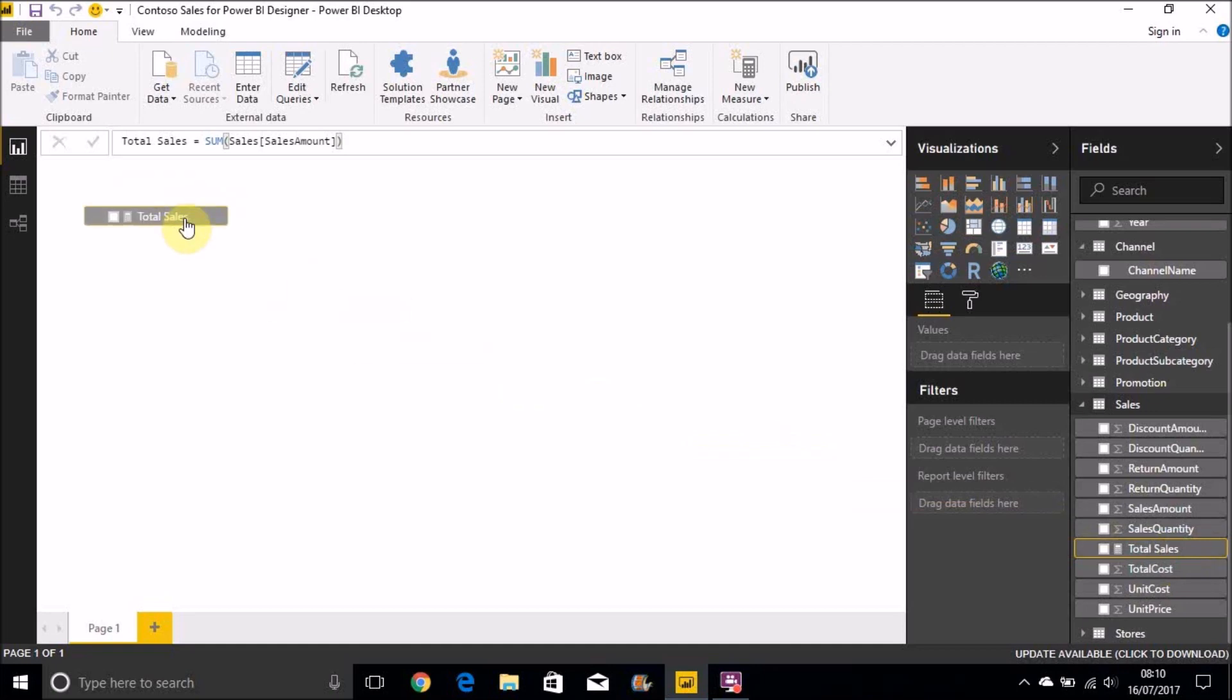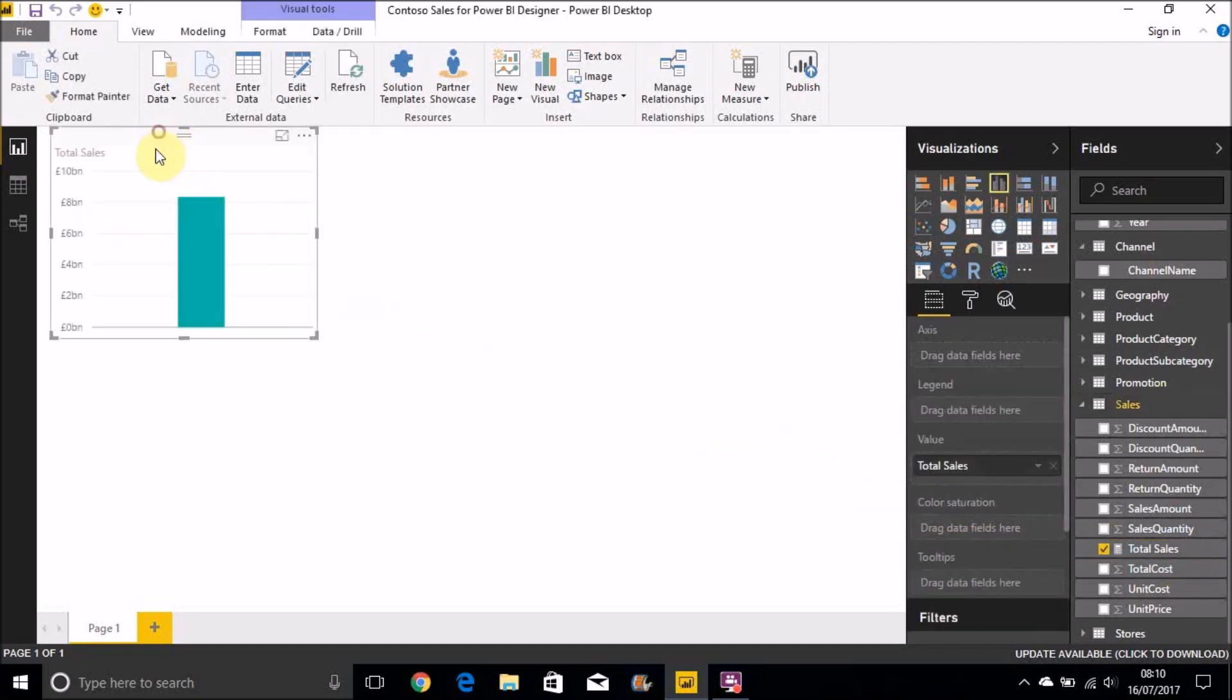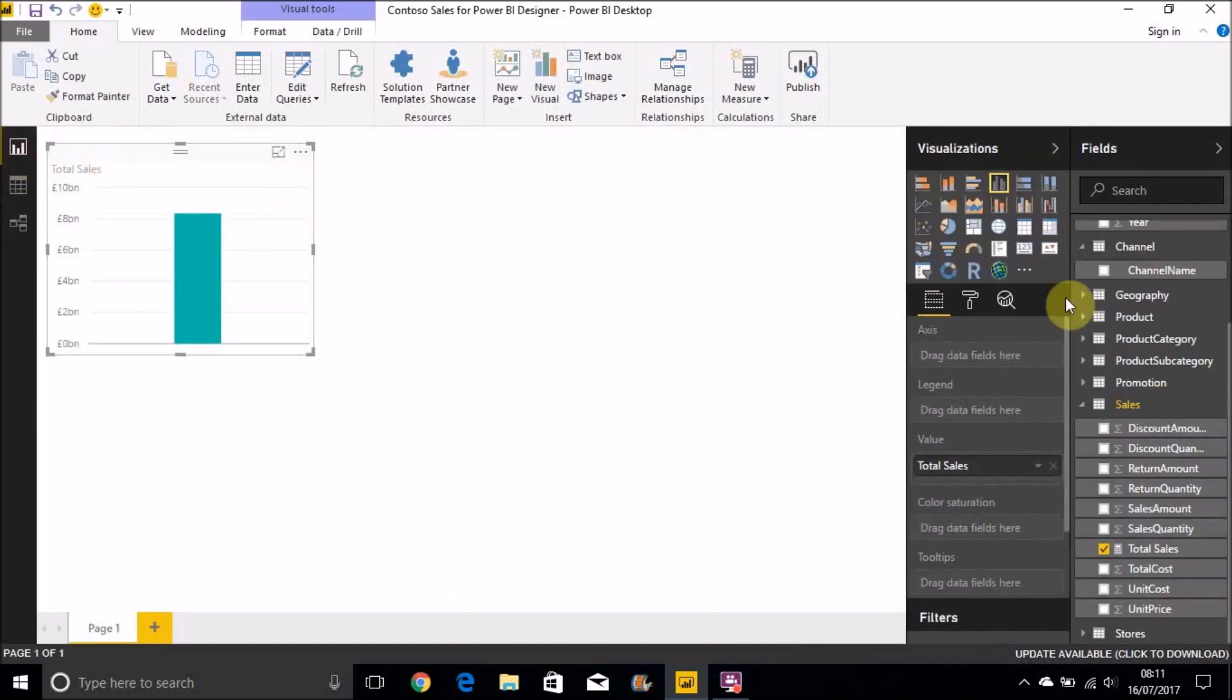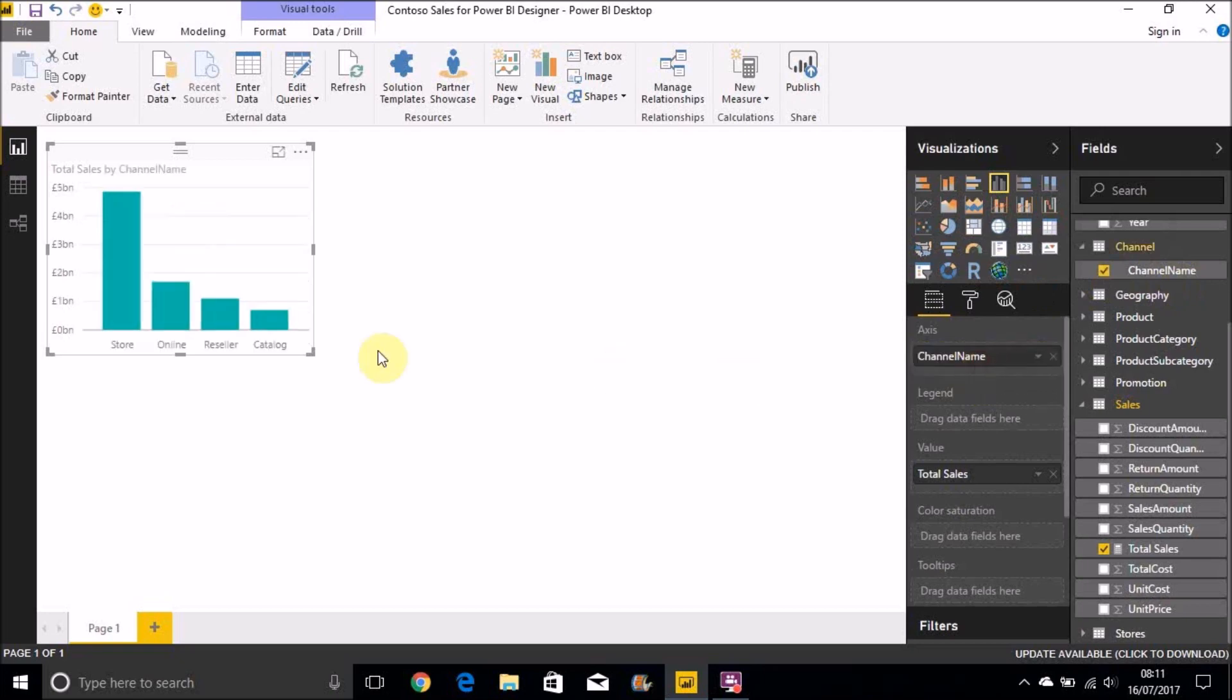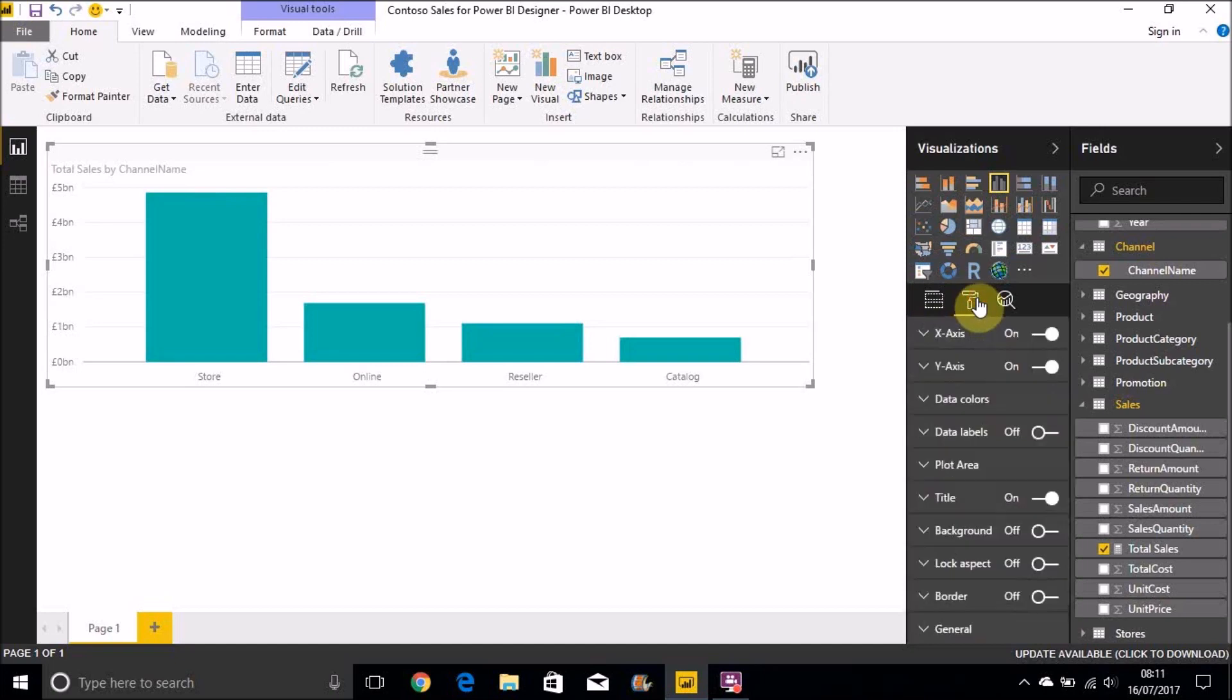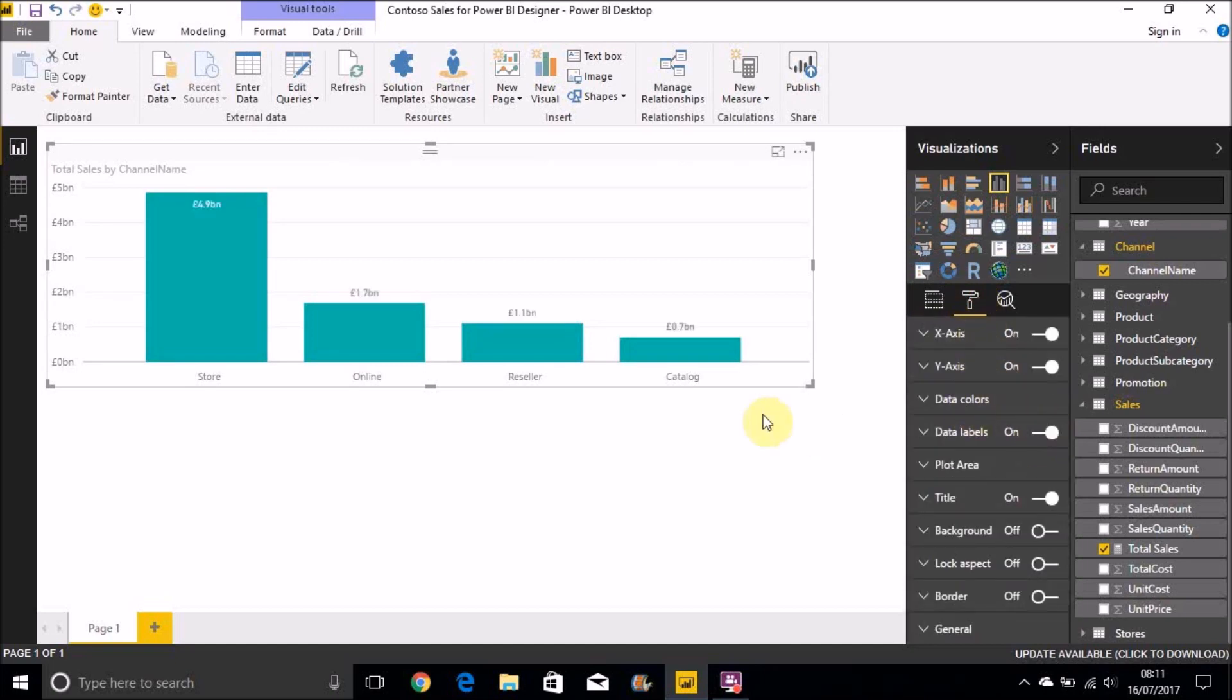This is our first measure. Let's just show that on the desktop here as a chart. So we have Total Sales, and then the Channel table is related to the Sales table. Let me have a quick look at that. There we can see that the Channel table has a relationship with the Sales table. So let's split that by Channel Name.